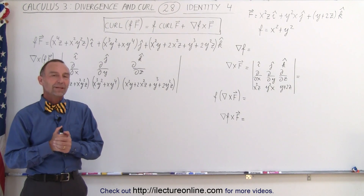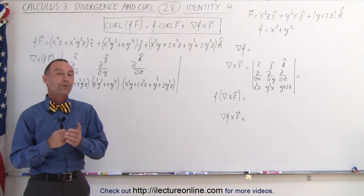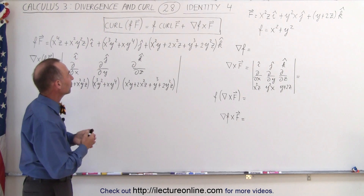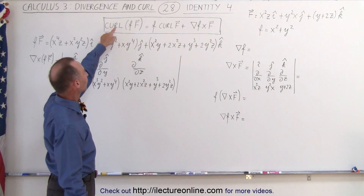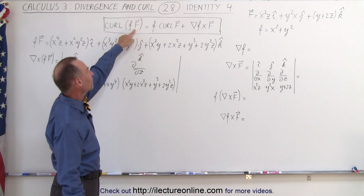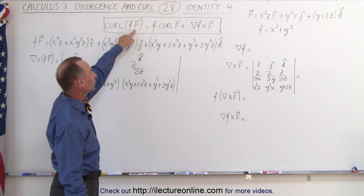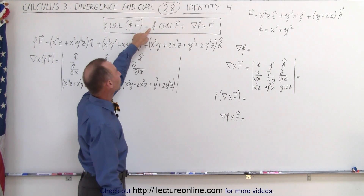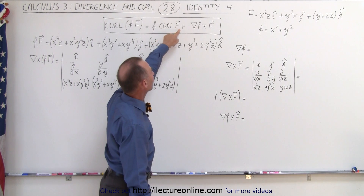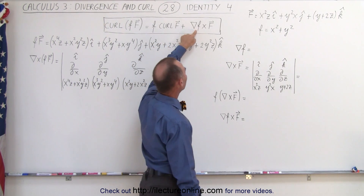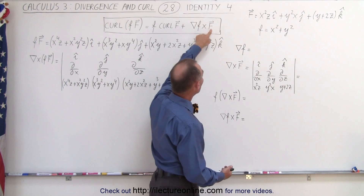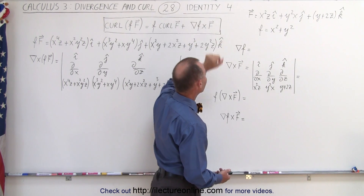Welcome to our lecture online. Our fourth identity involves the curl. It tells us that the curl of the product of a scalar function multiplied by a vector function should be equal to the scalar function times the curl of the vector function, plus the gradient of the scalar function multiplied via the cross product with the vector field.